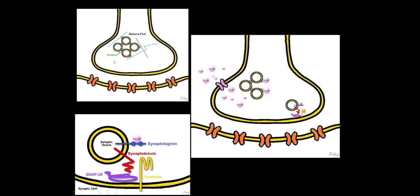Acetylcholine vesicles are normally bound together, but when there is an influx of calcium, this facilitates the vesicles binding with the presynaptic membrane. This occurs through snare proteins: in the synaptic vesicle we have synaptotagmin and synaptobrevin. When calcium binds to synaptotagmin, it stimulates synaptobrevin to bind with SNAP25 and syntaxin in the presynaptic membrane, causing acetylcholine to be released.